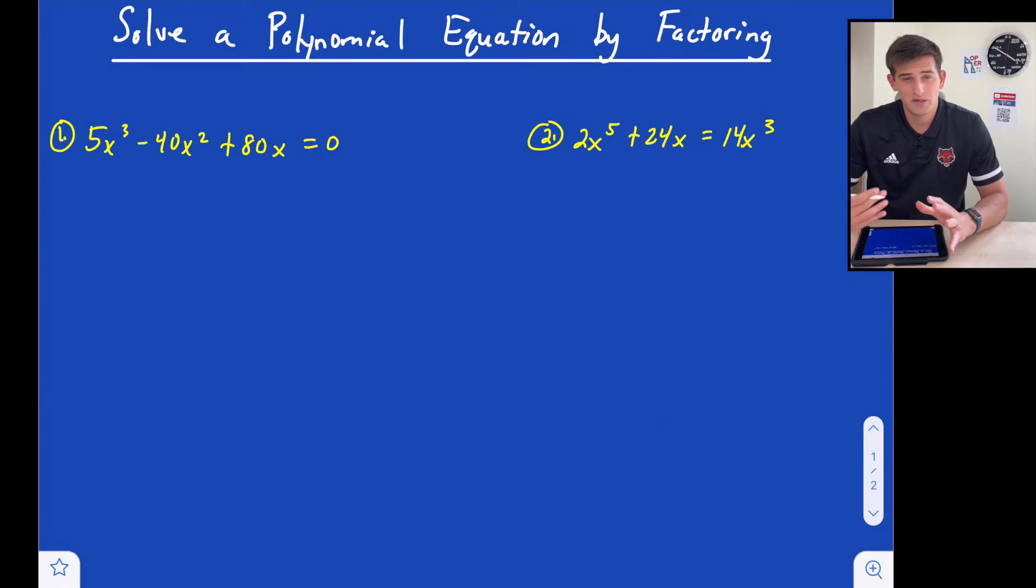So that is key because we can use a property known as the zero product property, which essentially says if we have two terms or two things being multiplied together and their product is zero, well one of those two terms had to be equal to zero, right?